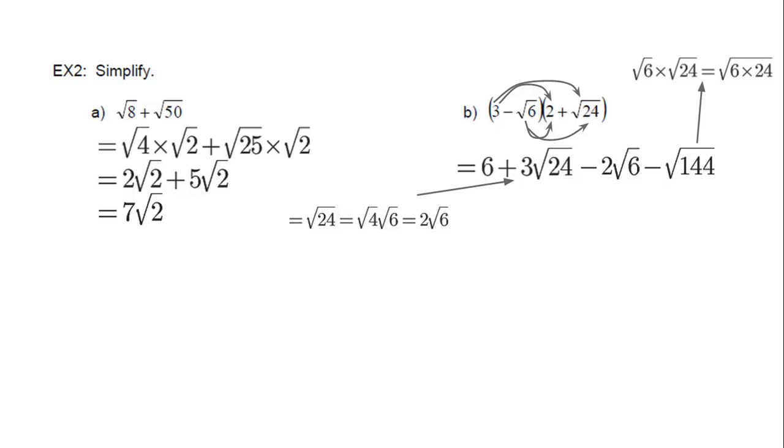So we're going to use a perfect square, something that we can take the square root of, but the biggest perfect square as well. Just subbing the √24 back in, we get 6 plus 3 times √3 times 2√6. That's what √24 is.